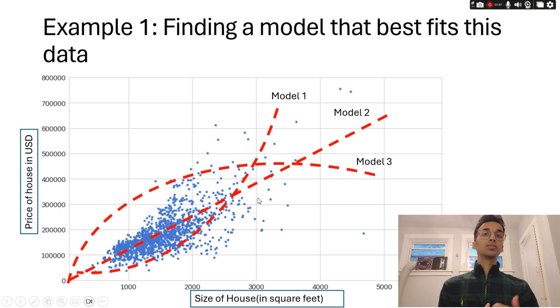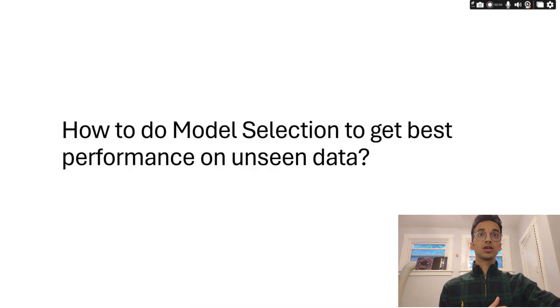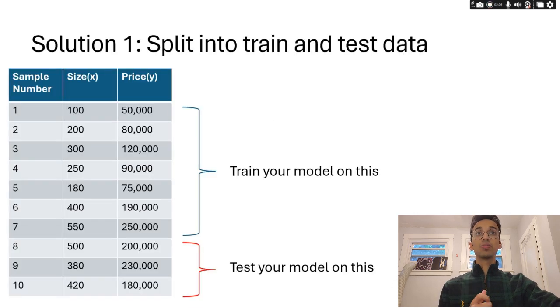So whenever you're solving a machine learning problem, whenever you're training a model, you'll have multiple options to choose from. You will have multiple models and you need to decide which model will be the best for your problem. So one method to select the best model in this case is to split the data into training and test sets.